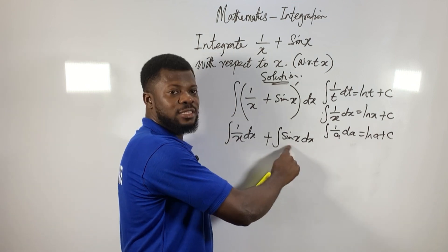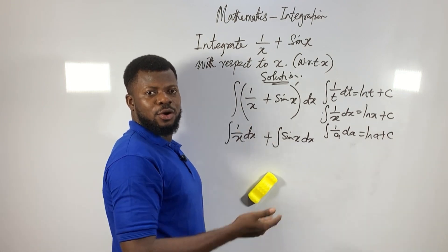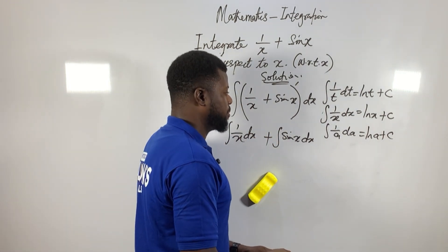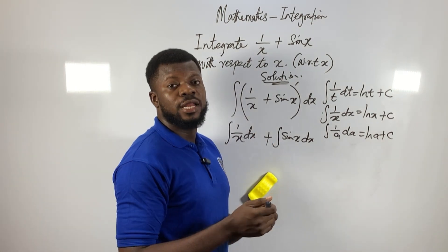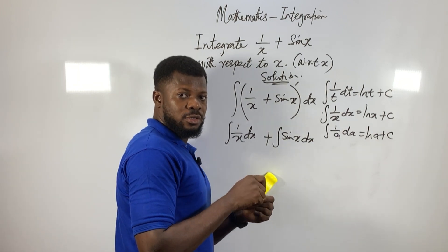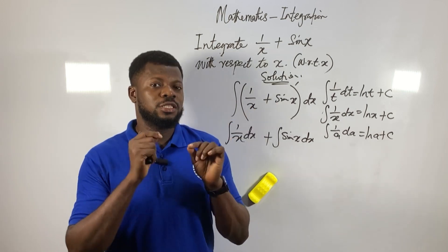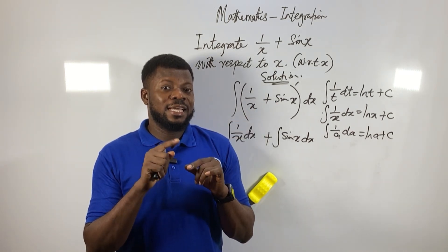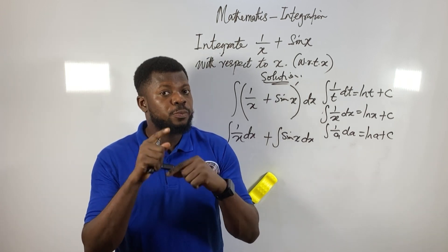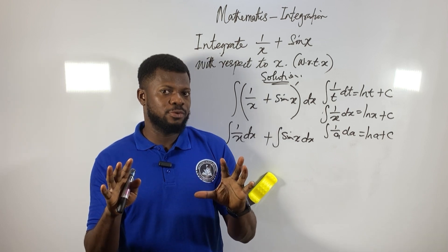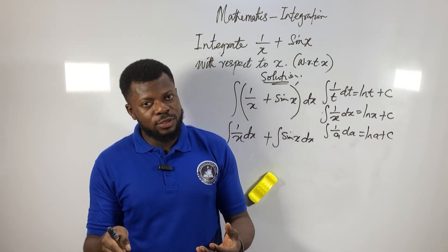Now there are three trig identities we are dealing with: sin x, cos x, and cot x. To handle them, you need to understand the relationship between differentiation and integration. Integration is the antiderivative of differentiation — meaning differentiation and integration are opposites of each other. That is what 'antiderivative' means in simpler terms.